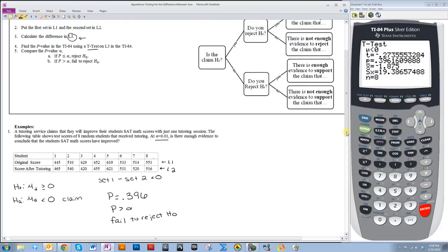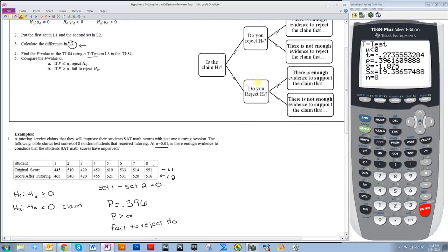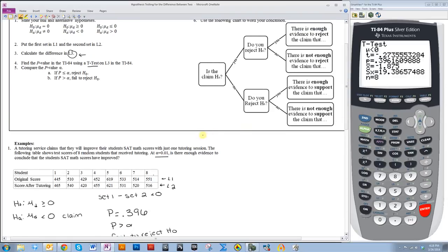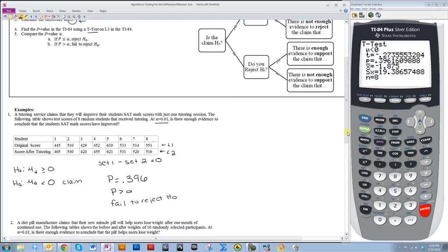So we fail to reject H0. Now I need to figure out how I'm going to word my final answer, and that's using this flowchart up here. The first thing I need to ask myself is the claim H0? In this case, it was not. So no, did we reject H0? No, we did not. So we say there is not enough evidence to support the claim.